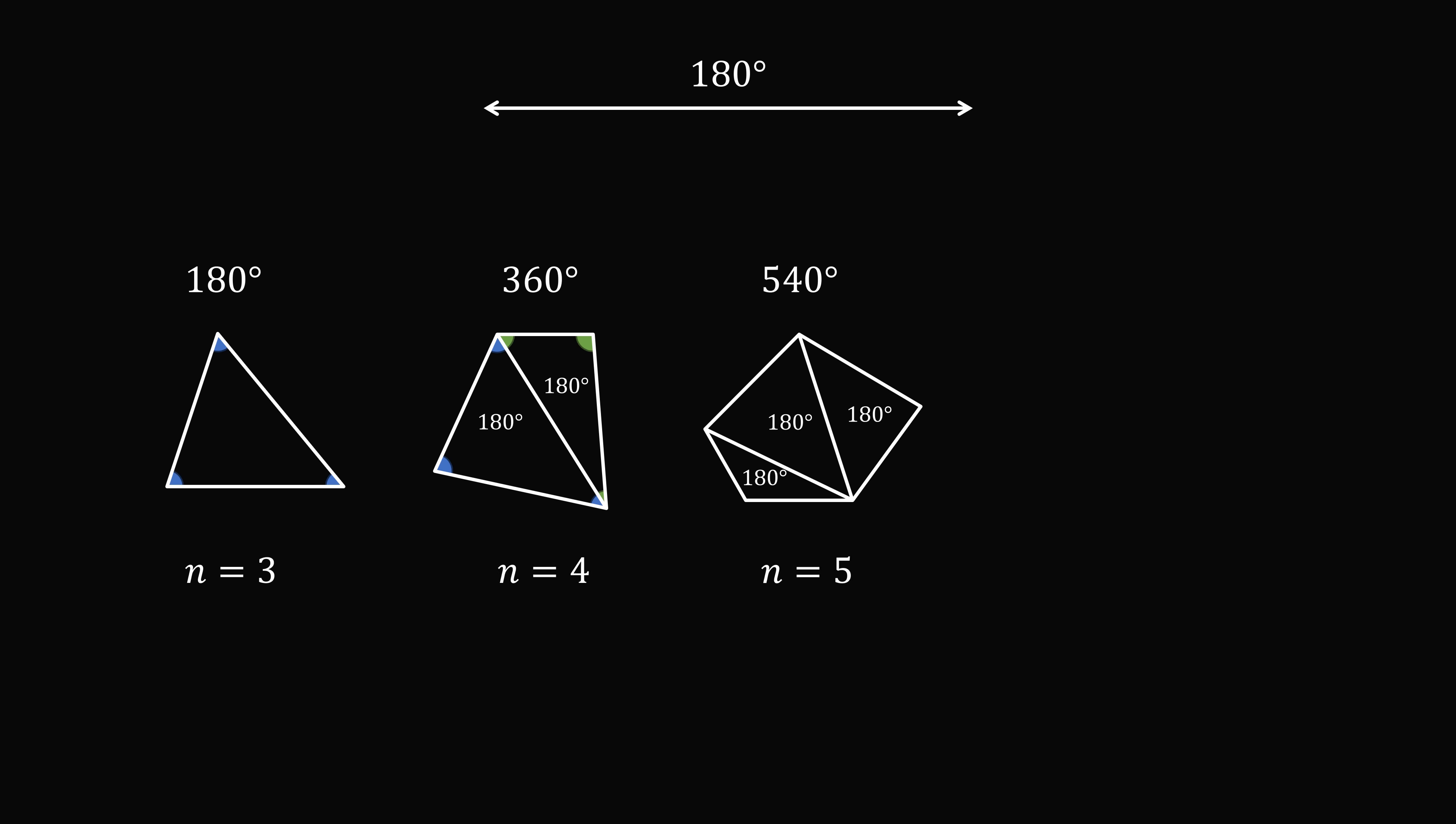So each time we increase n, we need to add 180 degrees. So we can easily come up with a formula for a general n-sided polygon, and this will work out to be 180 degrees multiplied by the quantity n minus two.